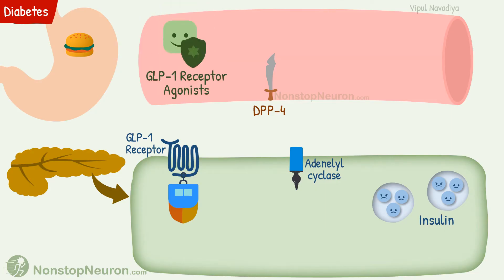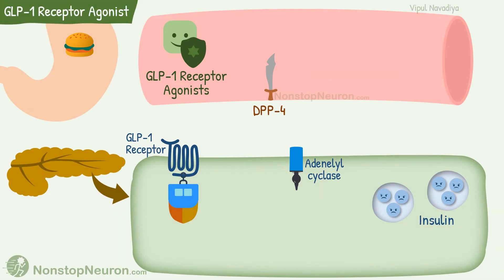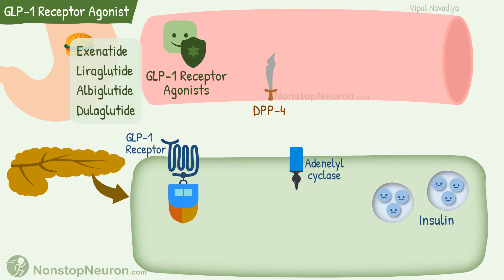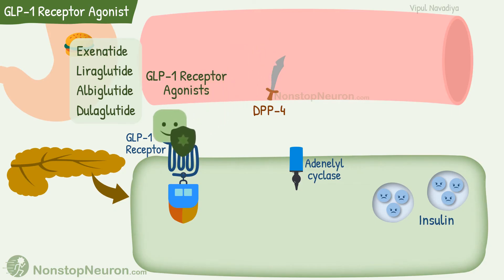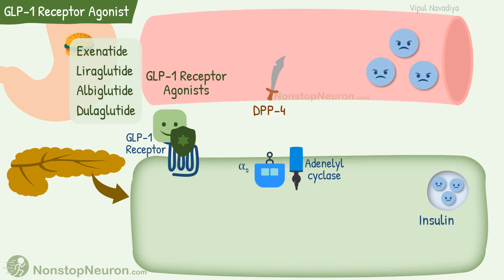One solution is GLP-1 analogs which are resistant to degradation by DPP-4, and the second is DPP-4 inhibitors. Let's see GLP-1 receptor agonists first. Drugs in this group are Exenatide, Liraglutide, Albiglutide, and Dulaglutide. They are resistant to degradation by DPP-4, so they stay longer in the body. Like GLP-1, they directly stimulate GLP-1 receptors. The intracellular signaling is essentially the same: activation of adenylyl cyclase, formation of cyclic AMP, and release of insulin. Thus, GLP-1 receptor agonists increase insulin release by directly activating GLP-1 receptors.